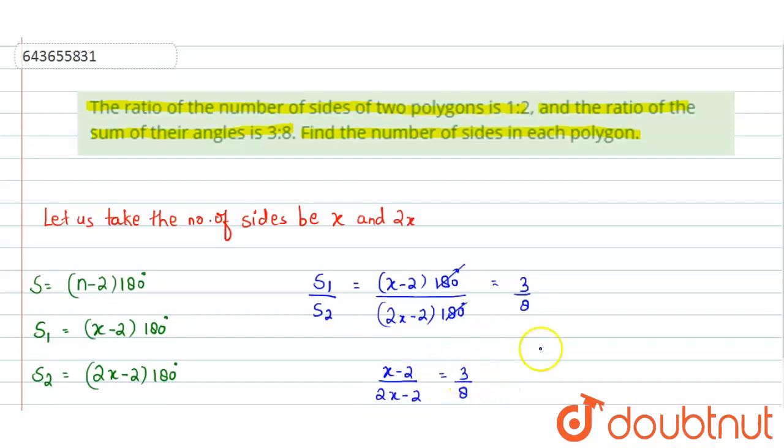Now simplifying this expression by cross multiplication, we will get 8x - 16 = 6x - 6. Then we can write 8x - 6x = -6 + 16 and this will give us 2x = 10, and from this the value of x will come out to be 5.